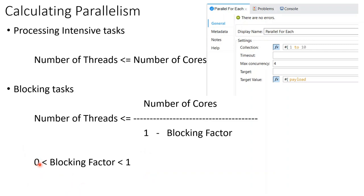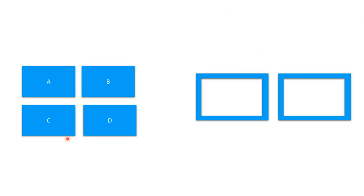What happens if you make the blocking factor 0? Then 1 − 0 = 1, and it would be equivalent to number of threads ≤ number of cores, which is for CPU-intensive tasks — so that should not be the case. And it should also not equal 1, because 1 − 1 = 0, and anything divided by 0 is indeterminate or infinite, which means your thread has encountered a deadlock. So let's understand how we derived this formula.